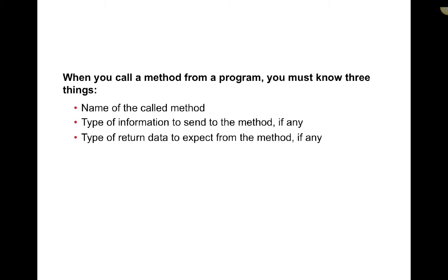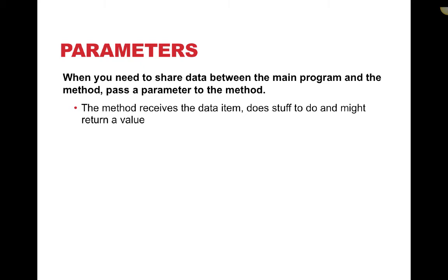When you use a method in a program you have to know three things: the name of the called method, the type of information to send to the method, and the type of data that will be returned from the method. When you need to share data between the main program and the method, it's called passing a parameter. The method receives the item, might do stuff to it, might return a value, might save it to a database. The way you get information between the main program and the method is by using a parameter — those are the things inside of the parentheses.